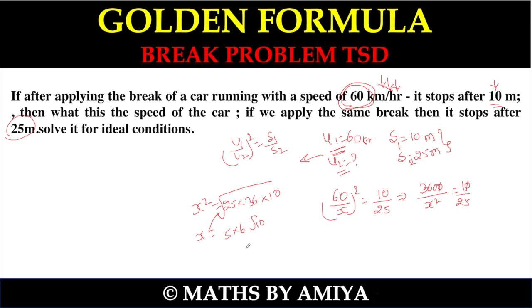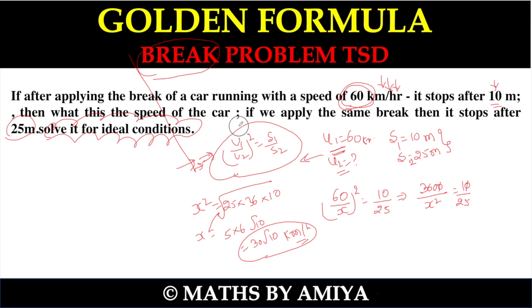30 root 10 kilometers per hour is the answer of this question. This is the golden formula we can use. If break is not written, then we have Newton's third equation derivation. This is the learning of the golden formula.